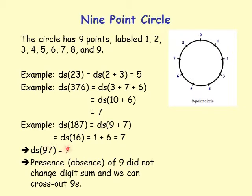So digit sum of 9 plus 7 is 7 — the 9 didn't change the digit sum. If I had a 7 by itself, digit sum is 7. The presence or absence of 9 does not change the digit sum, and we can cross out 9s when computing digit sums.